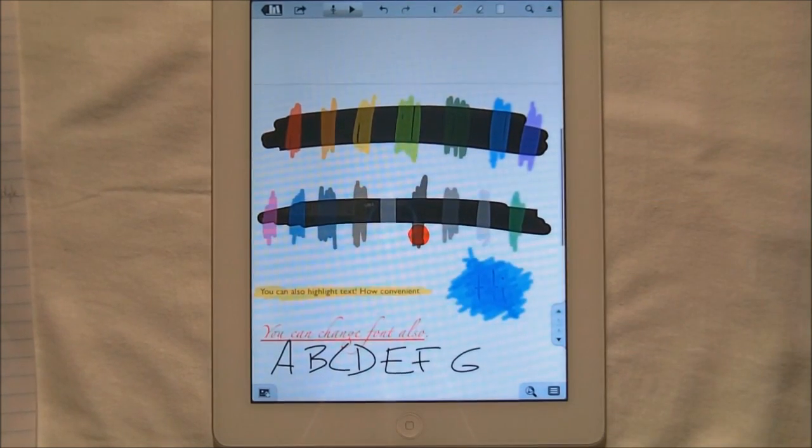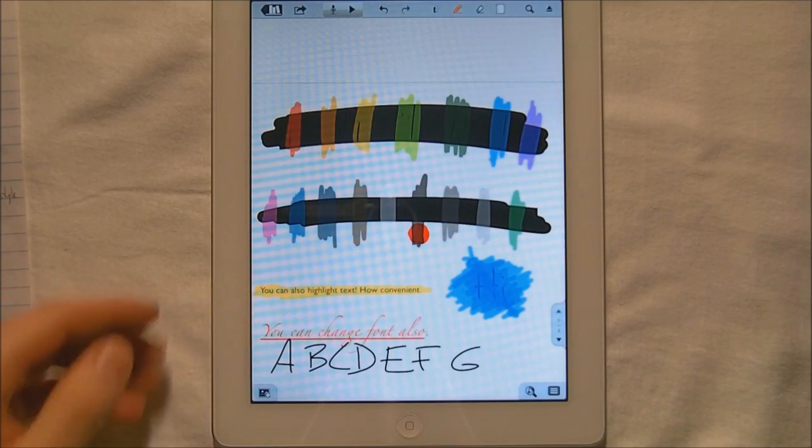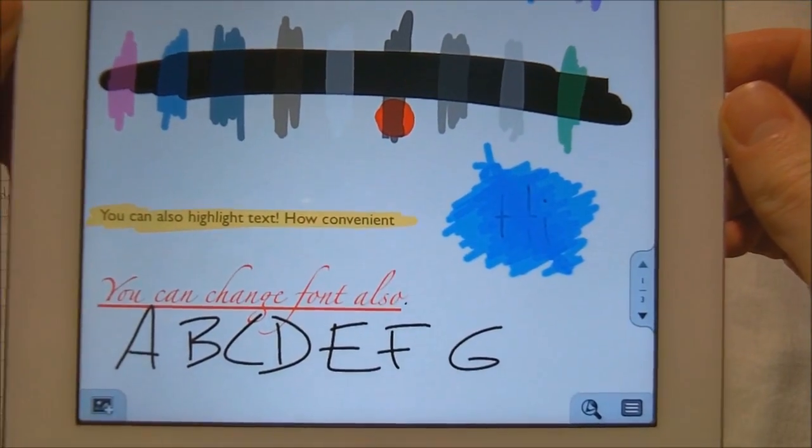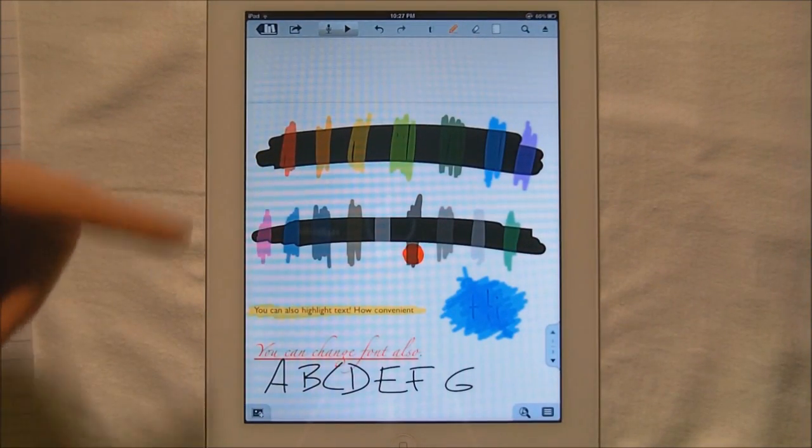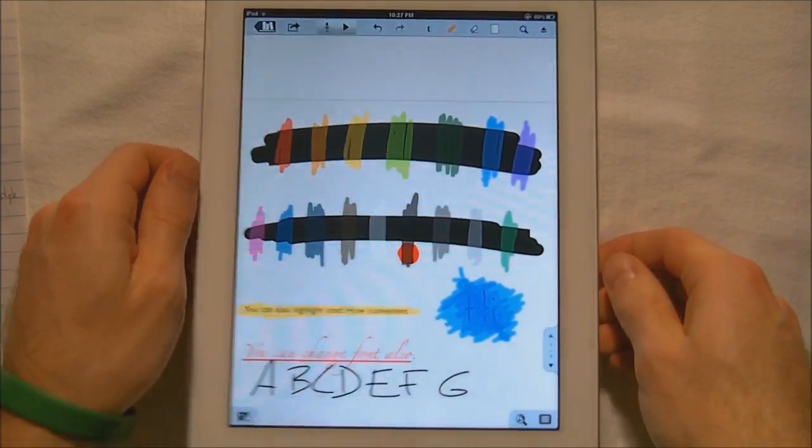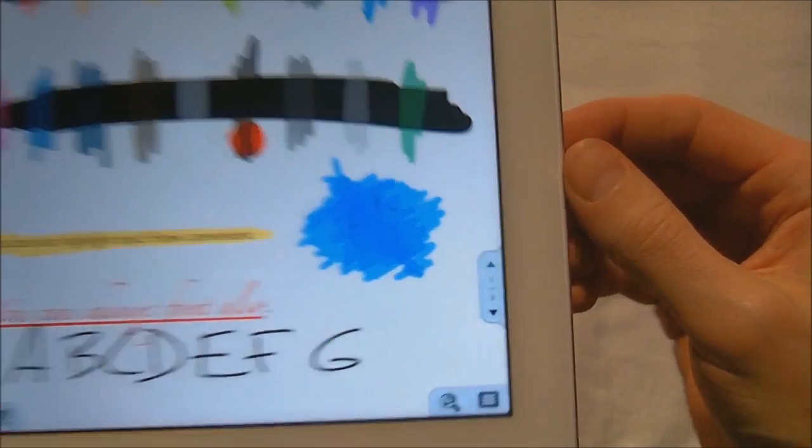And these are actually your highlights. So you can actually use a highlighter. I type down here. You can also highlight text. How convenient. So the highlighter is really cool. You can highlight your text or highlight whatever you want. If you do use the highlighter enough though, you can see that the layering gets thick enough where you kind of block out your text.